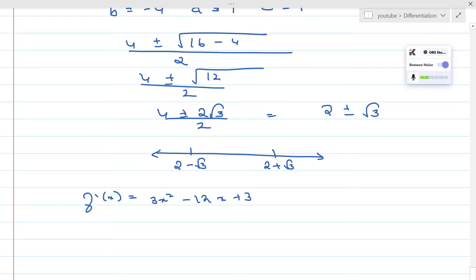Let's pick a value. 2 - √3, √3 is 1.7 something, so we can pick x at 0. f'(0) is going to give us 3, which is a positive value. So in our sign diagram we can put this as positive.